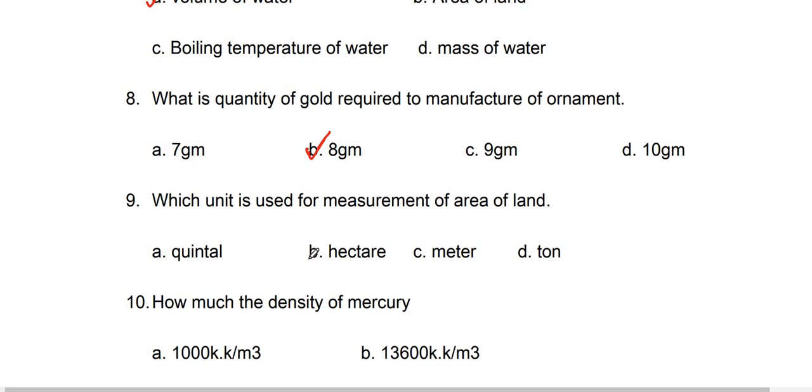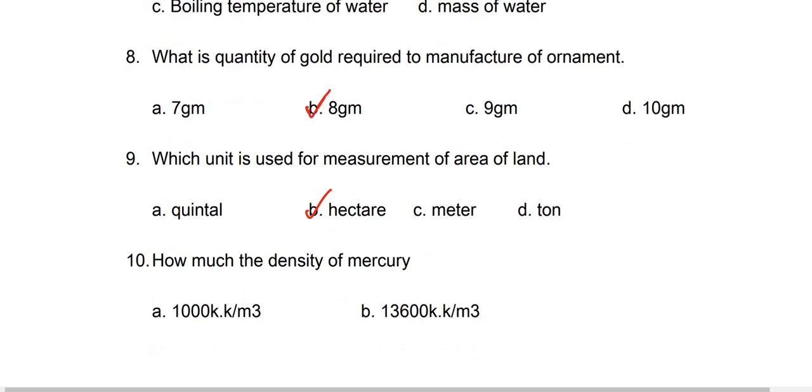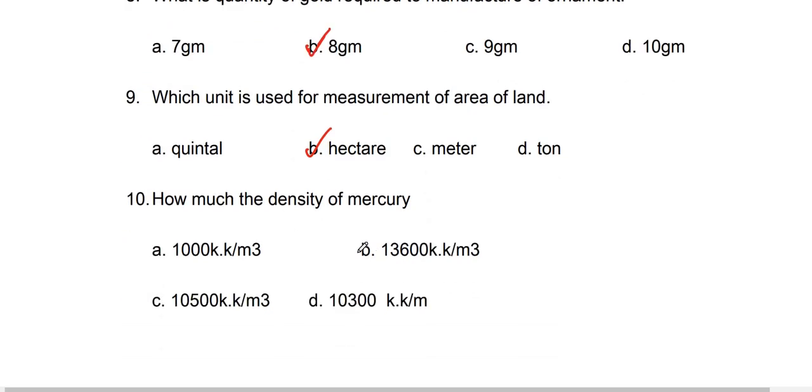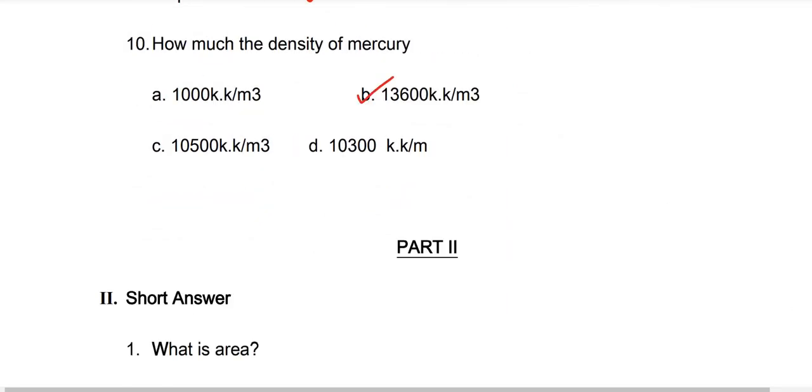For land measurement we use hectares. How much is the density of mercury? 13,600, option B. Next, Part 2: Short answers.